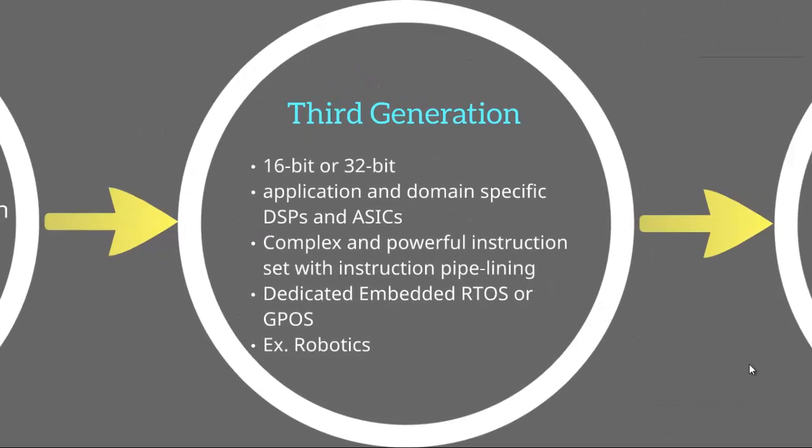In the third generation, 16-bit and 32-bit controllers were the trend. Even digital signal processors and application-specific integrated circuits were tailored for specific needs. The instruction set further increased in complexity and power, and instruction pipelining was done to read code from memory faster. Another trend was that real-time operating systems and general-purpose operating systems were being used for products. An example of this generation would be the several works in the field of robotics.